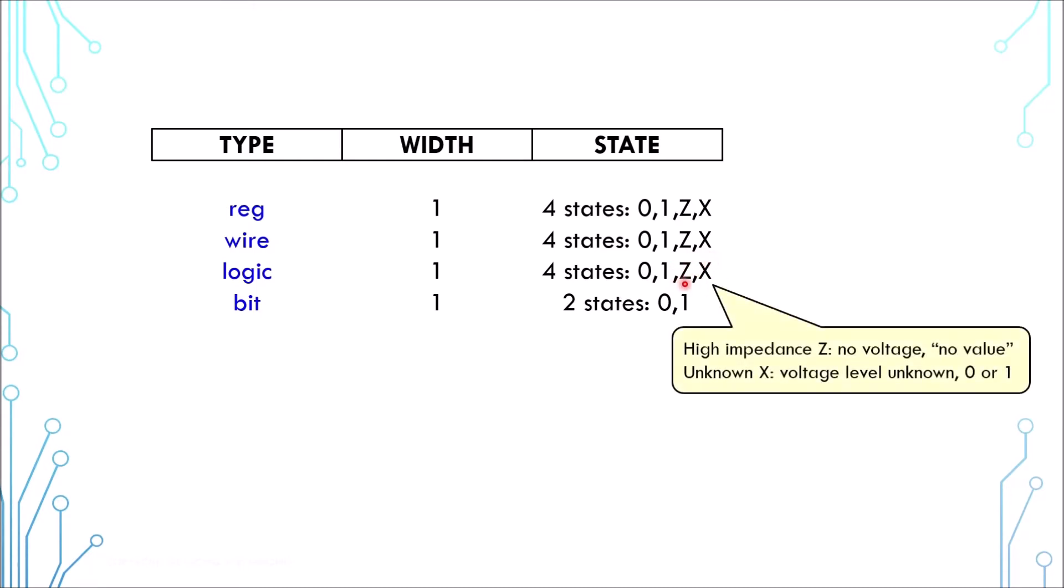High impedance means there is no voltage—for example, it could be disconnected—and therefore there's no value, which is different from a logical zero. Unknown value means there is a certain voltage, but we cannot tell whether it is a logical zero or one.